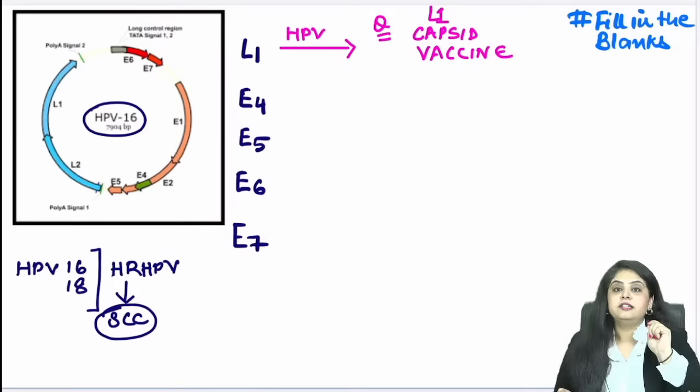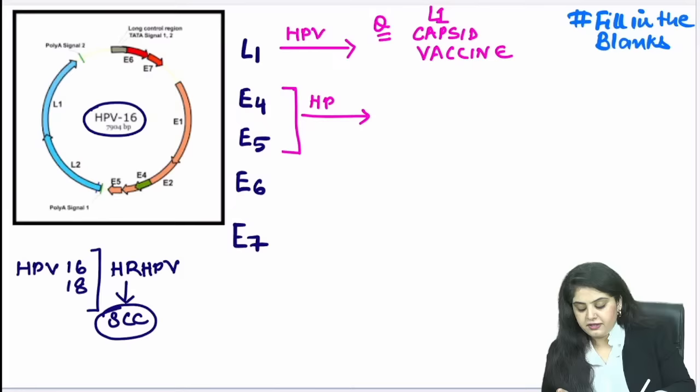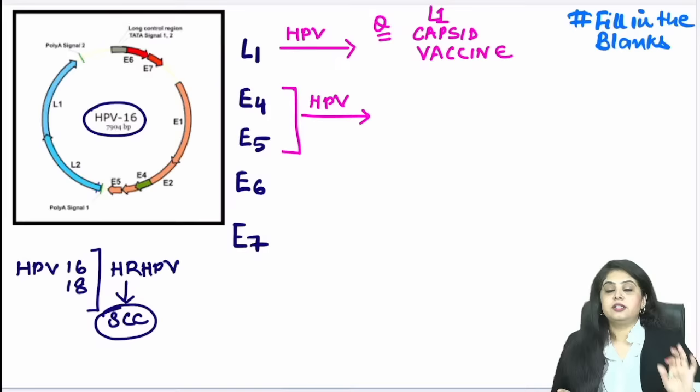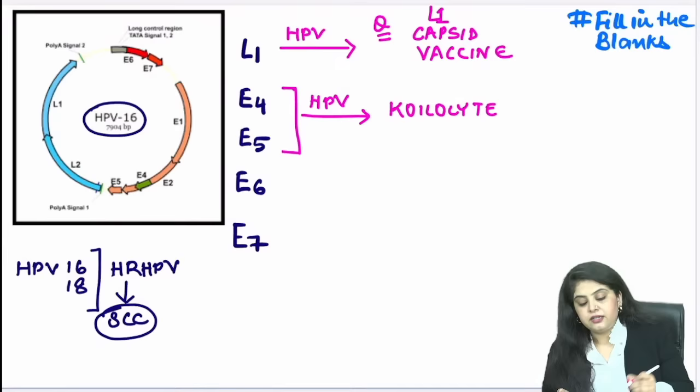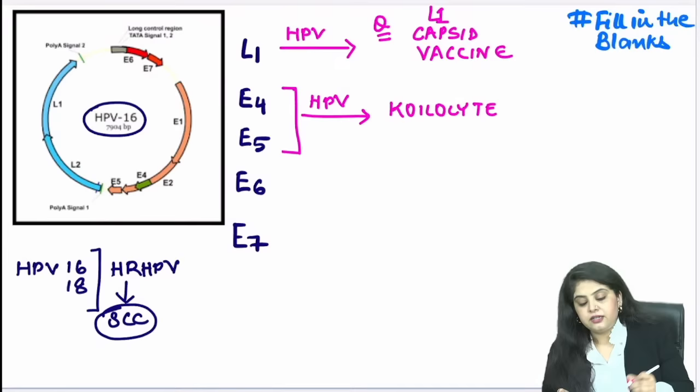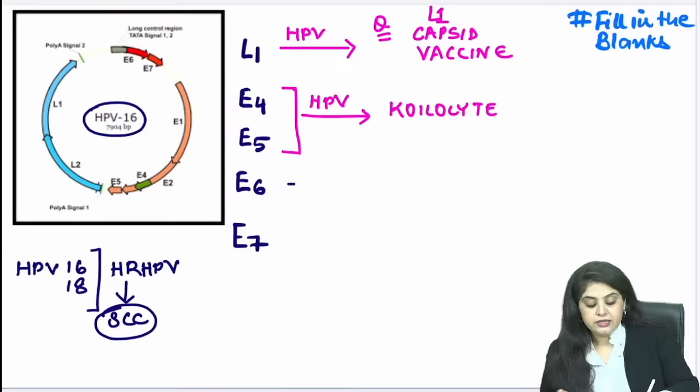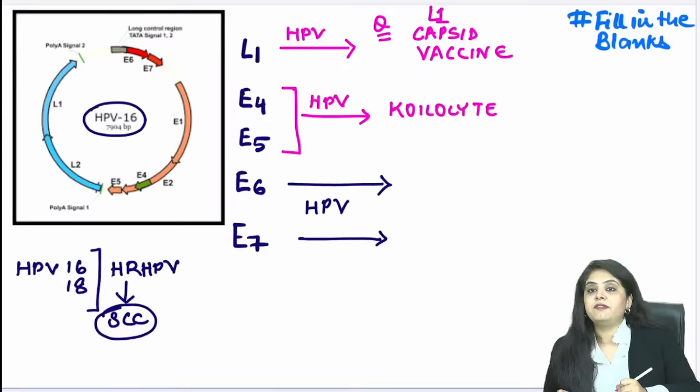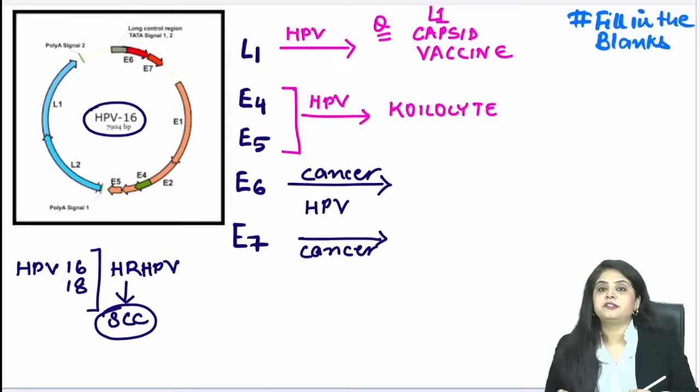Coming to E4 and E5: what is their role in HPV? This is a previous-year question. The koilocyte — the raisinoid nucleus and perinuclear halo — is all associated with E4 and E5. Now E6 and E7: these are the oncogenic components. E6 causes cancer, E7 causes cancer. How? Because they switch off the tumour suppressor genes.